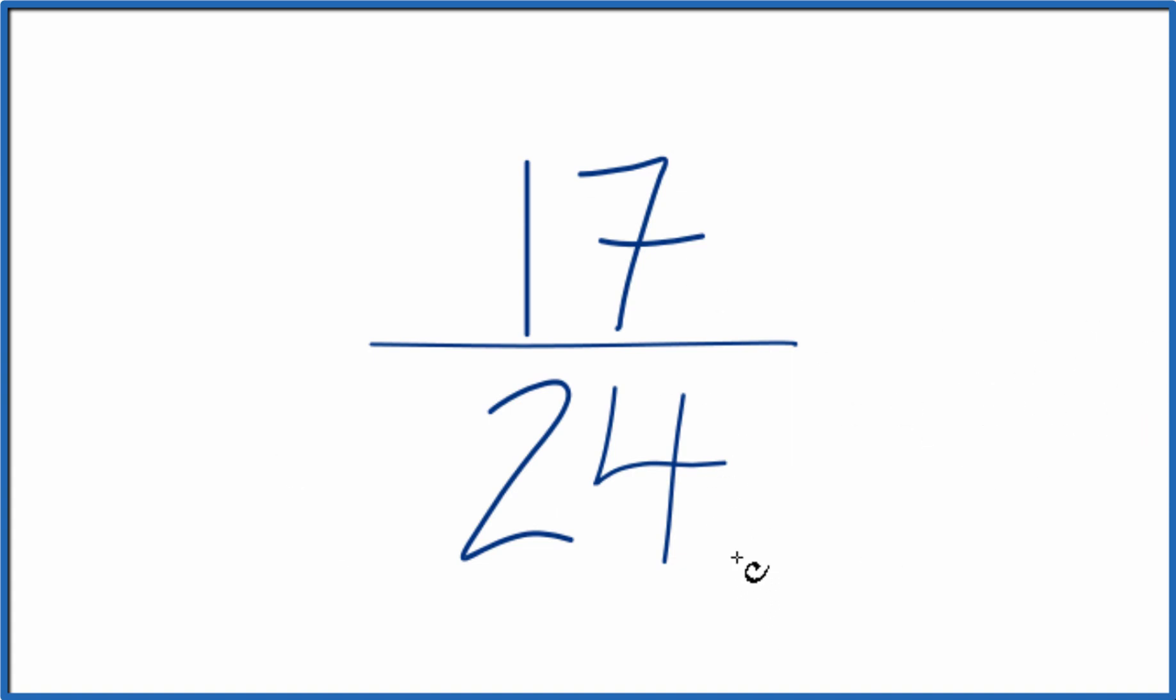What we need to find is a common factor, something that goes into 17 and 24 evenly. But the only number that will go into both 17 and 24, the only whole number, is 1.